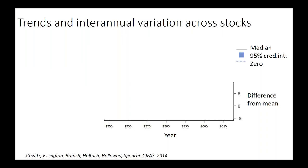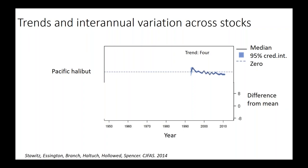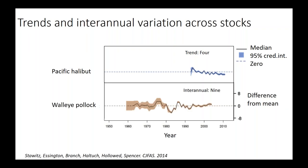What did these estimated trends look like? The x-axis is year, the y-axis is normalized difference from mean length at age, and lines represent the median with 95% credible intervals as shaded regions. For four species including Pacific halibut, there was a noticeable trend—a distinct increase or decrease persistent over the time series. For nine species like walleye pollock, we didn't see a consistent increase or decrease; instead there were fluctuations around the long-term mean with periods of smaller and larger sizes but no trend.